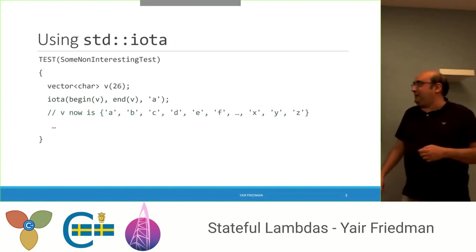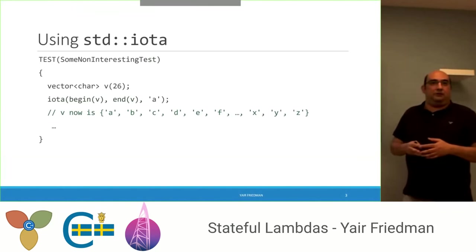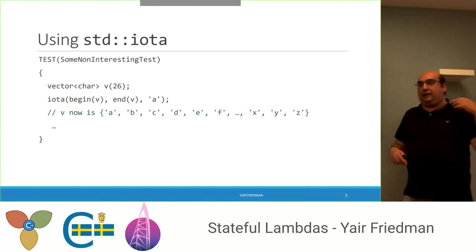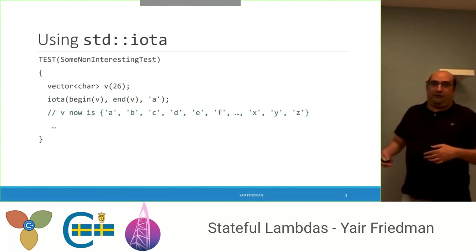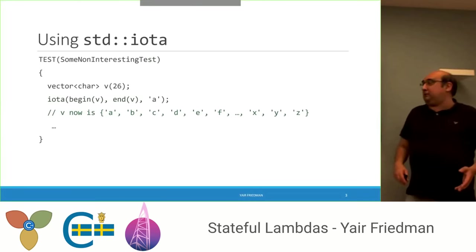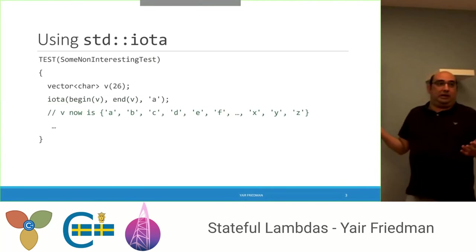The first algorithm is IOTA, a new addition in C++11. What it does: it takes begin and end iterators, an initial value, and applies the increment operator one by one until it reaches the end. So if we want to fill up our vector with letters, we have a fairly consistent way, and it's much more clear and less error-prone. The problem with this method is that it only works for simplistic cases, where you need to fill up a simple range with an ever-increasing or decreasing value.